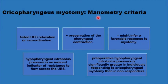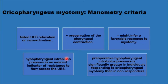Pharyngeal and oesophageal manometry, if available, is also helpful in patient selection. A manometric indication of failed upper oesophageal sphincter relaxation with preserved pharyngeal contraction indicates a good response to the operation. The measurement of intrabolus hypopharyngeal pressure is a good indicator of resistance to flow across the upper oesophageal sphincter. If this pressure is high, the patient is likely to benefit from surgery; if it is low, patients did not benefit much.